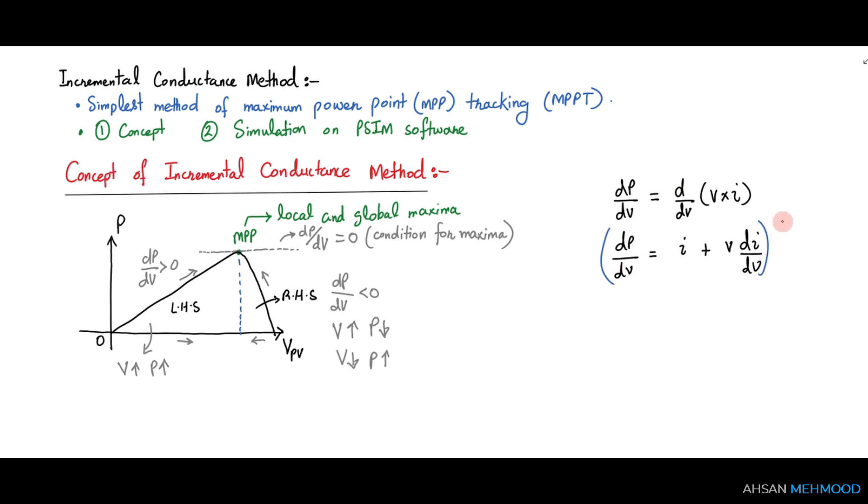What we are implying here is that if this term is greater than zero, then the PV panel is operating on the left-hand side region. If this term equals zero, then the PV panel is operating at MPP. And if it is less than zero, then it is operating on the right-hand side of the MPP line.